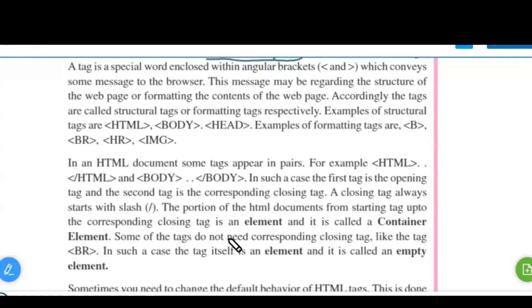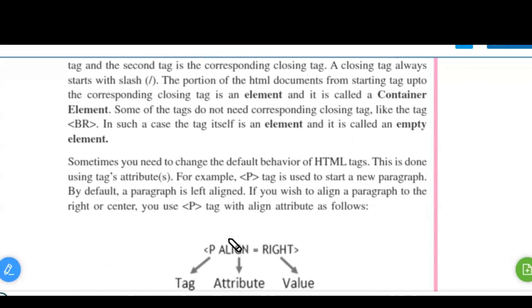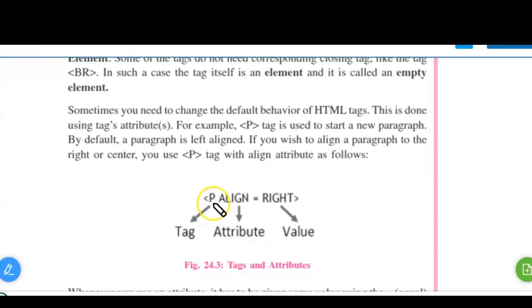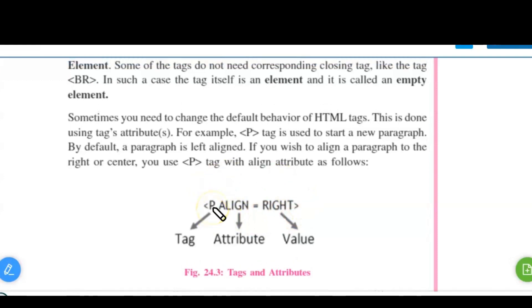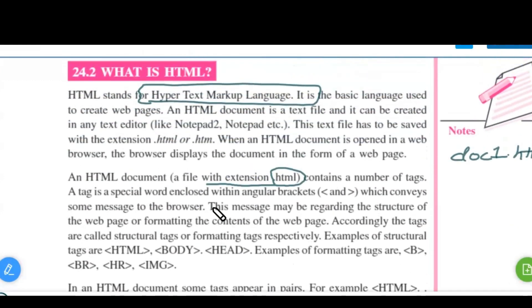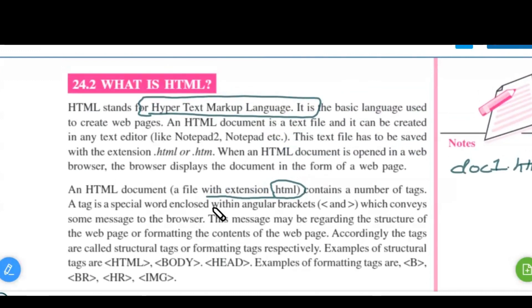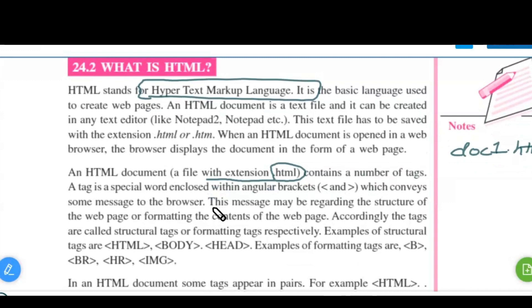These are the tags used in HTML. For example, P is a tag — we call it a tag. The attribute defines what kind of feature you want for a particular tag, and you assign a value to it using an equals sign. This is the way you write a tag. HTML has a defined structure for writing a program.